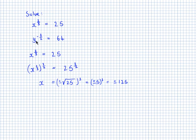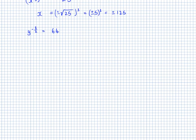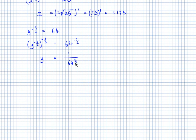For the second equation, y to the power of negative 3 over 2 equals 64: raise both sides to the power of negative 2 over 3, since negative 3 over 2 times negative 2 over 3 equals 1. On the right, I have 1 over 64 to the power of 2 thirds — cube root of 64 is 4, and 4 squared is 16. So y equals 1 over 16.